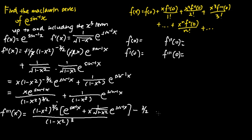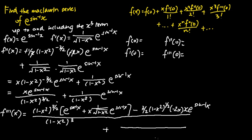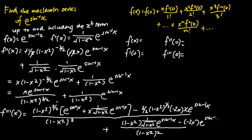Keeping x times e to the power of sine inverse x completes the first term. For the second term, we apply the quotient rule of differentiation. We square the denominator to get (1 minus x squared) squared, bring the denominator up to the numerator, and differentiate e to the power of sine inverse x to get 1 over square root of 1 minus x squared times e to the power of sine inverse x, then subtract the derivative of (1 minus x squared), which is negative 2x, keeping e to the power of sine inverse x. So for f'''(x), the first term is this whole chunk and the second term is this whole chunk.